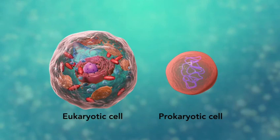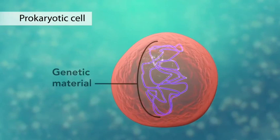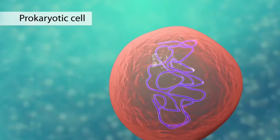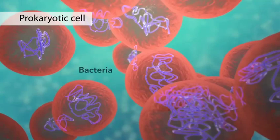The second category is prokaryotic cells. They don't have a nucleus or membrane-enclosed organelles. They do have genetic material, but it's not contained within a nucleus. Prokaryotic cells are always one-celled, or unicellular organisms, such as bacteria.